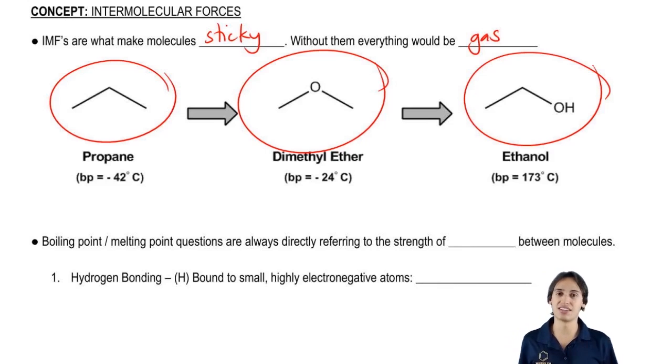And then the last one here is ethanol. And I've brought up ethanol before, you guys are very familiar with it. That's like vodka. And if your vodka was a gas, it probably wouldn't be as easy to consume, right? But it turns out that ethanol doesn't boil until 173 degrees Celsius.